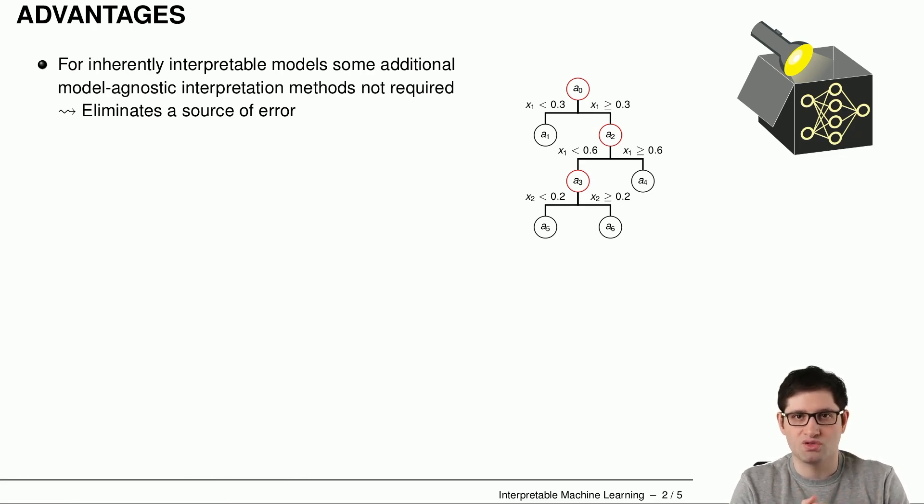Having no need to apply them and extract information out of the model with these model agnostic methods, we get rid of one potential source of error. So here on the right-hand side, for example, we see a decision tree. We will have a look at the decision trees later in more detail. But basically what a decision tree tries to do is it splits the feature space into regions and then predicts in the leaf nodes, like these guys here, gives you a prediction of your target.